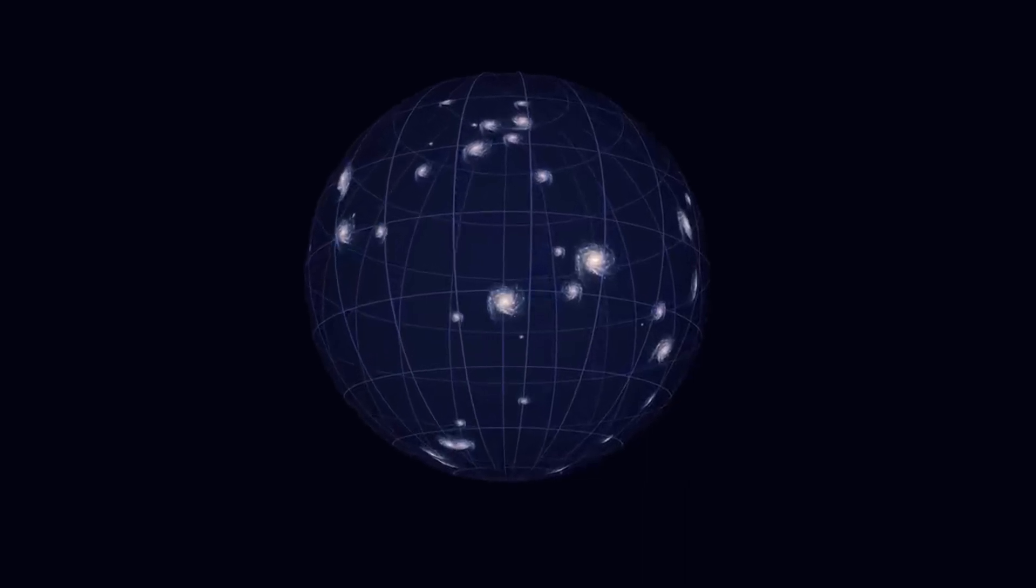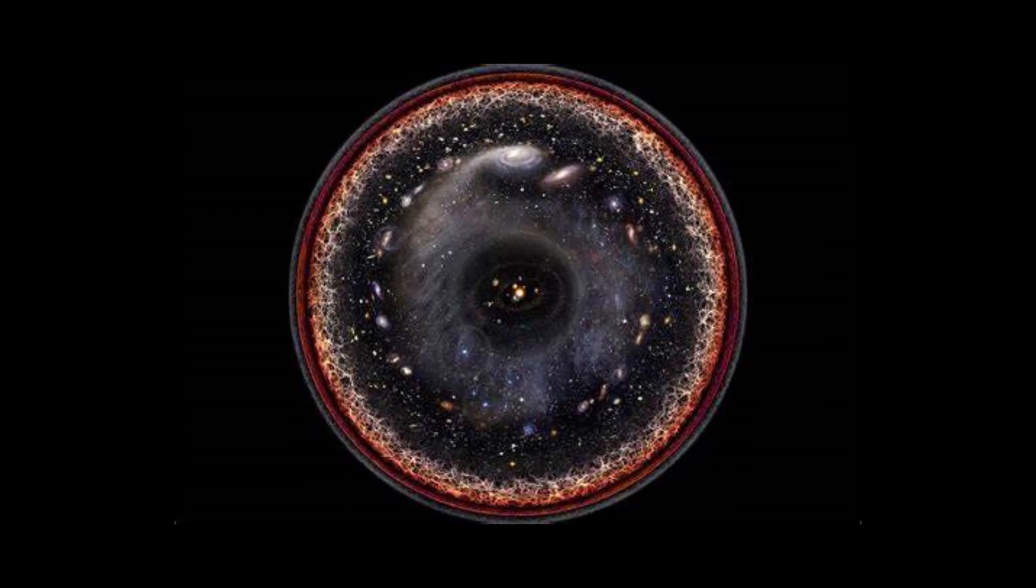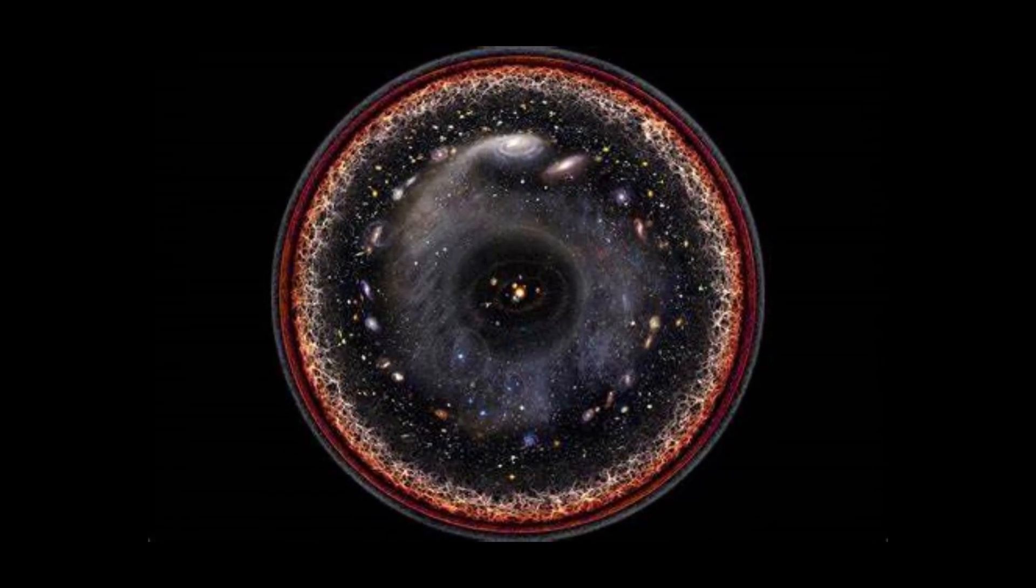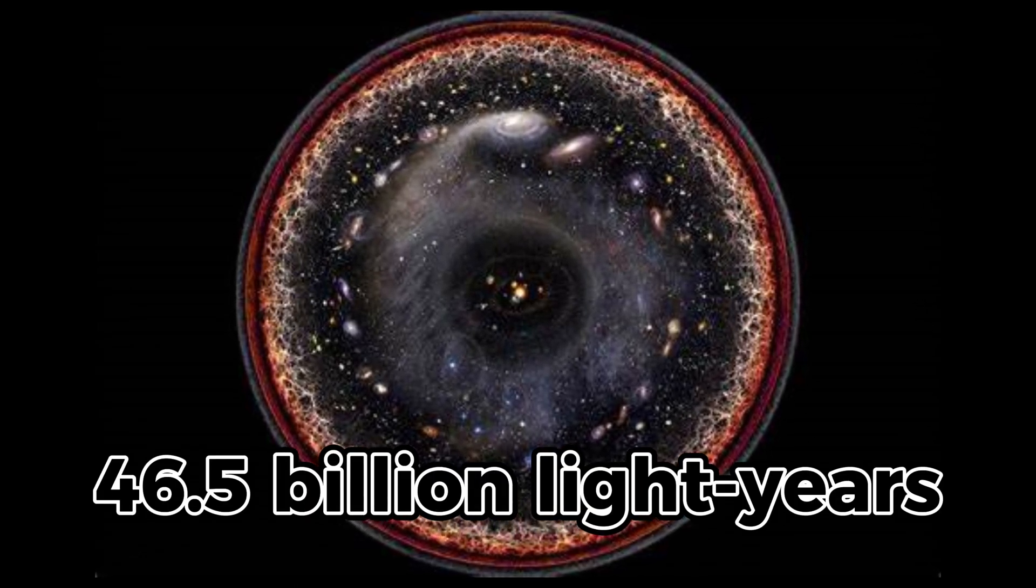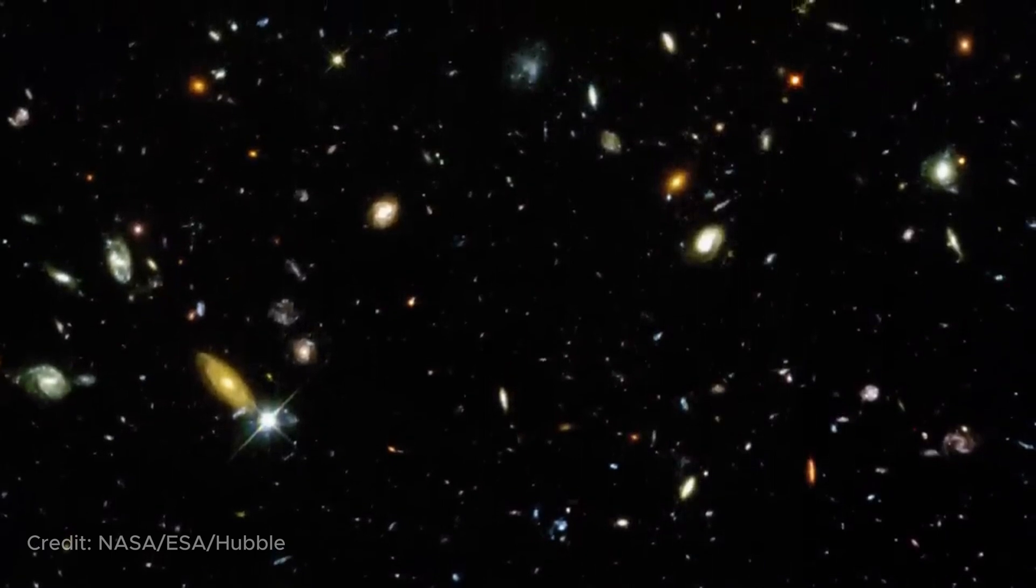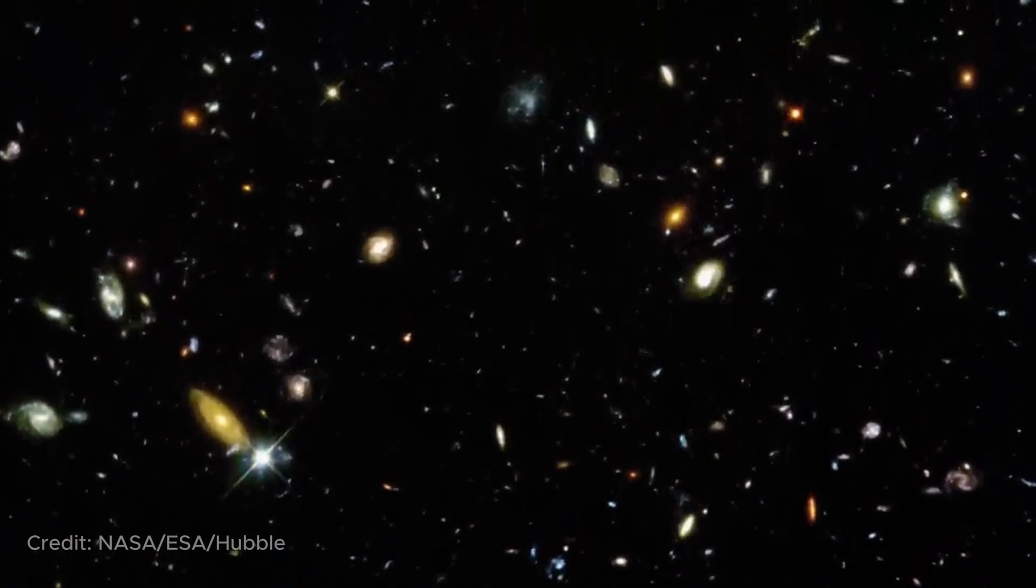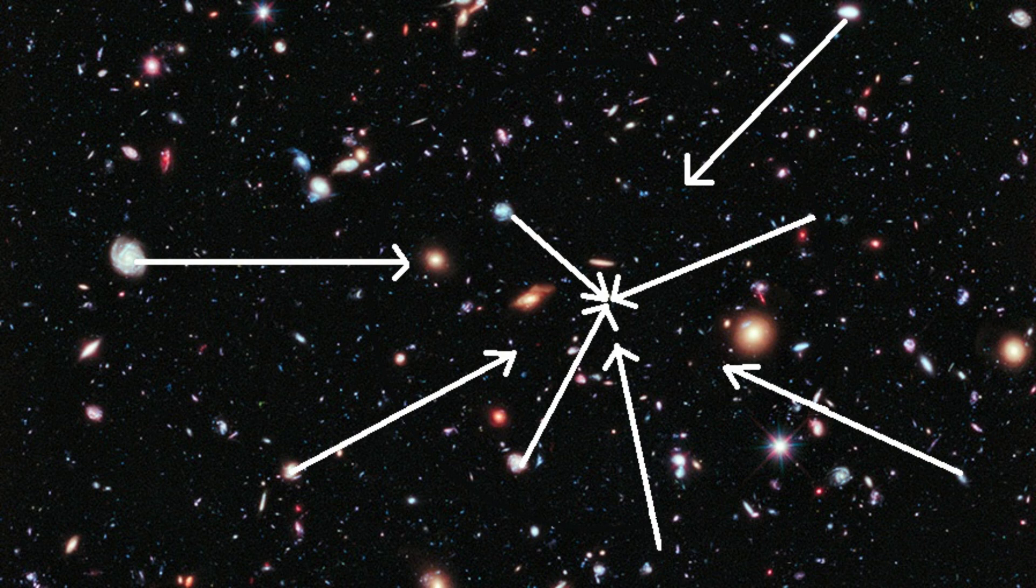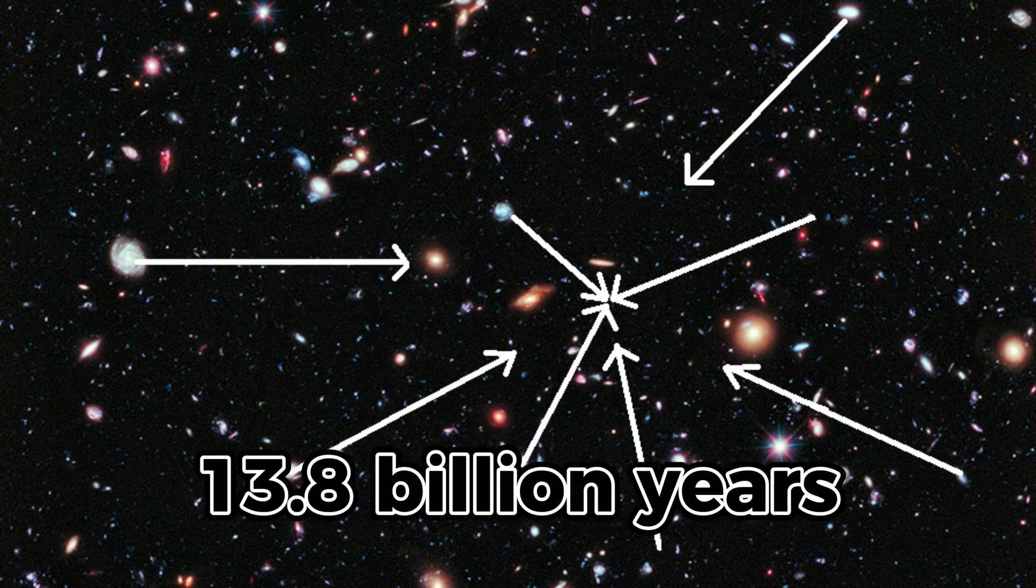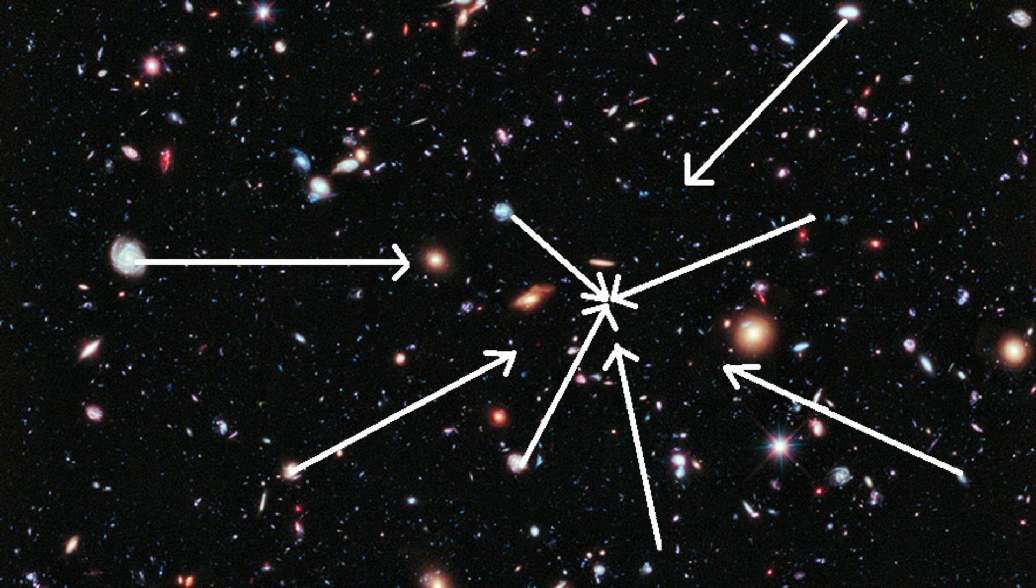The observable universe is a kind of bubble, a section of the universe with us at the center with a radius of approximately 46.5 billion light-years. We are certainly not at the center of the universe. It's just that the size of the bubble is determined by where the light has had time to reach us since the beginning of the universe 13.8 billion years ago. From other points, the light has not yet reached us due to the finite speed of light and the age of the universe.